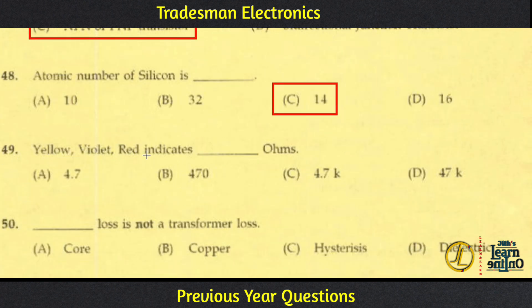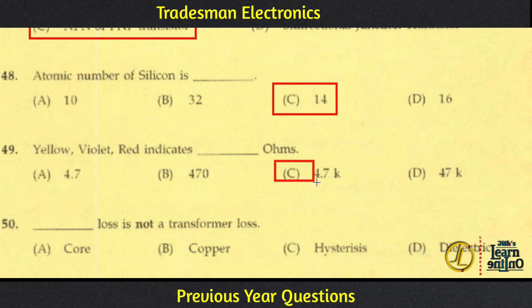Looking at the resistor color code for yellow-violet-red: yellow is 4, violet is 7, and red is the multiplier code 2, meaning ×10². So the resistance is 47 × 10² = 4.7 kΩ.